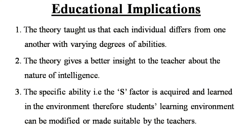Regarding the educational implications of this theory: firstly, the theory teaches us that each individual differs from one another with varying degrees of abilities, and therefore each child is unique with their own capacity. Secondly, the theory gives teachers better insight into the nature of intelligence. Thirdly, the S factor — specific ability — is acquired and learned from the environment, and therefore students' learning environments can be modified or made suitable by teachers for effective learning.